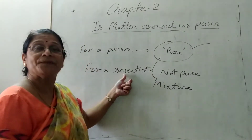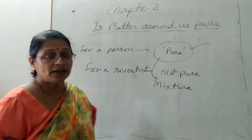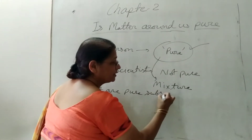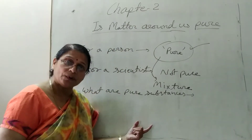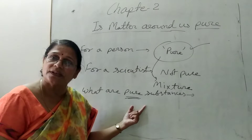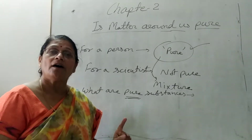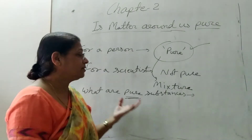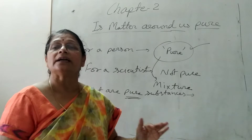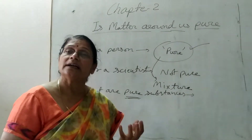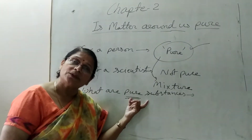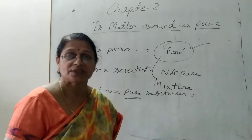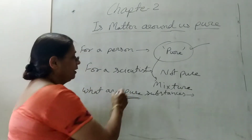In the view of a scientist, these are mixtures. So what are pure substances? Pure substances are those substances which consist of only a single or one type of substance. Pure substance or pure matter is the substance which consists of a single type of thing or single type of material.